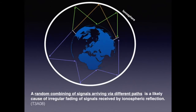When the conditions are right, the ionosphere makes an ideal reflector for HF radio signals. Often called the skip or a hop, it can carry a signal for a distance of over 2,000 miles. With CW or Morse code this distance can be made with as little as a half a watt of power under ideal conditions. The ionosphere can also create multiple paths. For the exam, a random combining of signals arriving via different paths is a likely cause of irregular fading of signals received by ionospheric reflection.